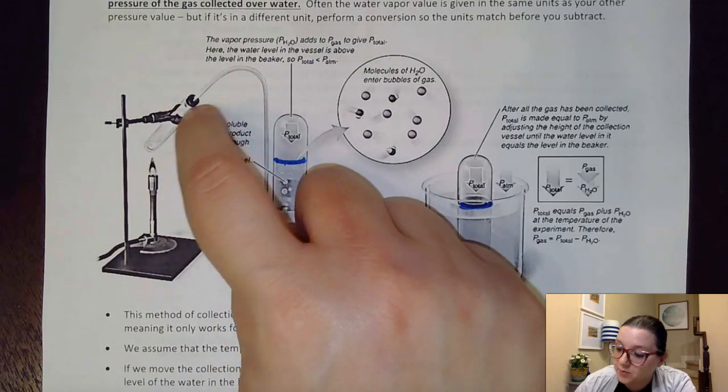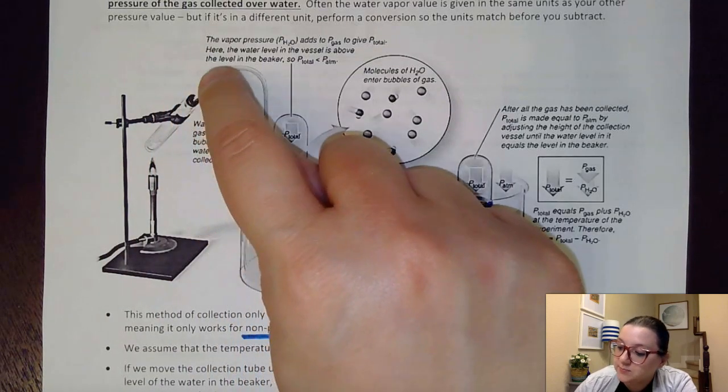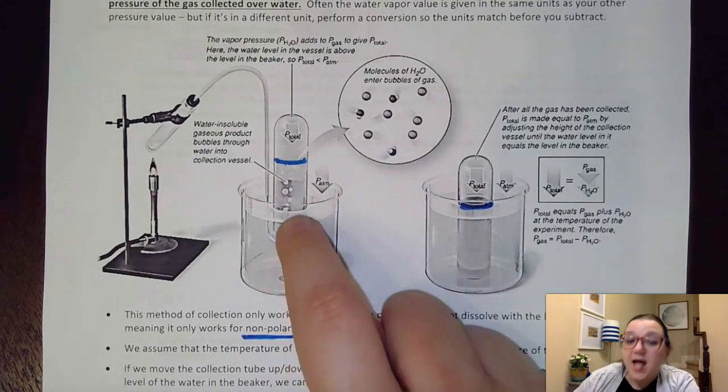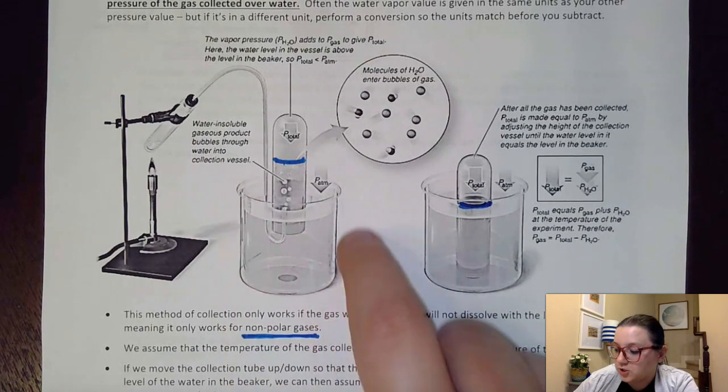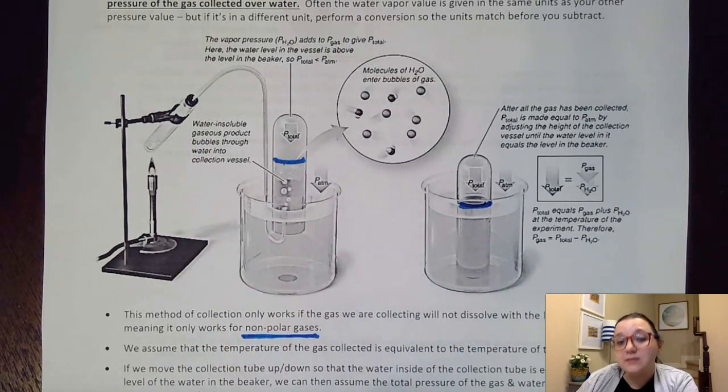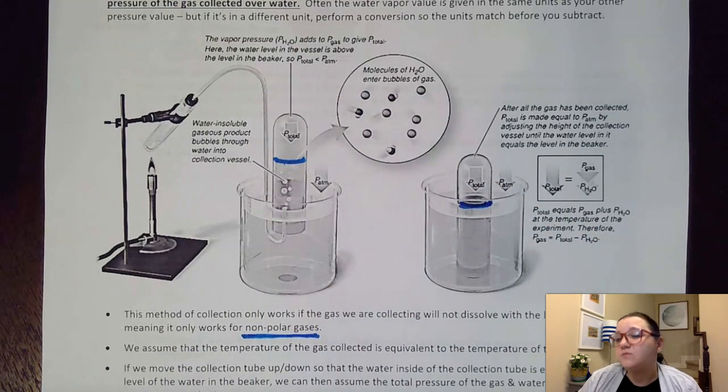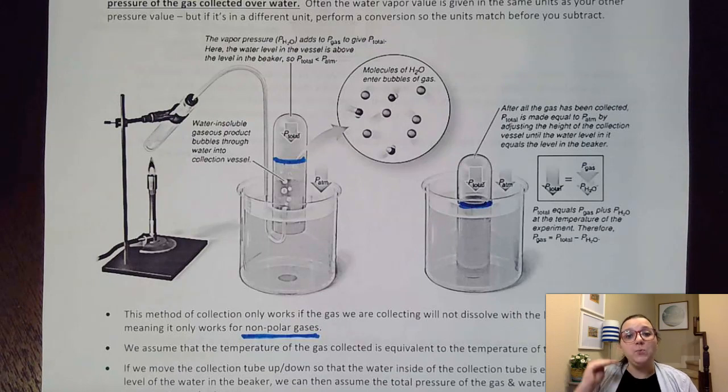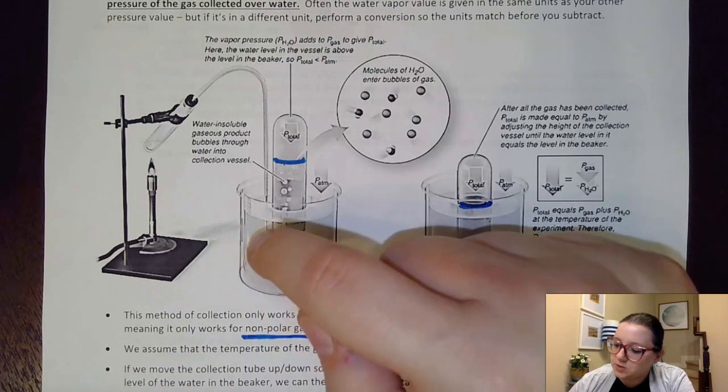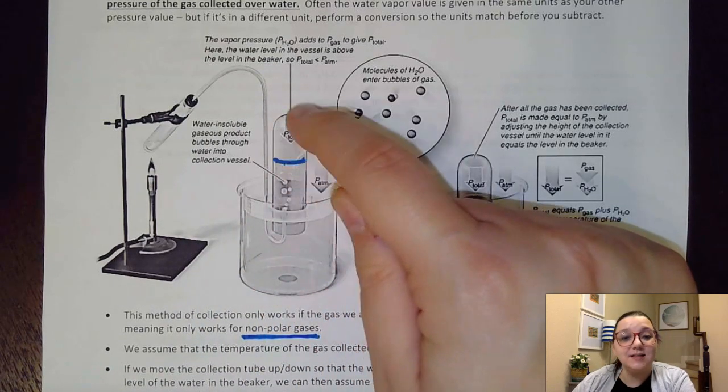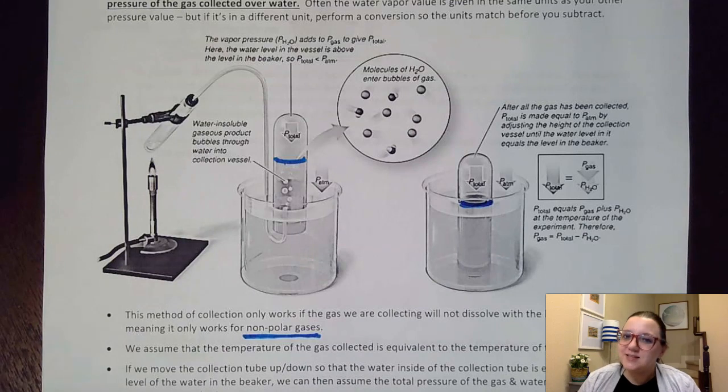So to do that, we would have a stopper in our reaction with some gas tubing coming out of it, and then we would run this into a large container of water where we had a smaller inverted container of water over it. This inverted container more than likely would be a graduated cylinder, so that way we would have some millimeter markings on there so we could actually record our volume. And what we would do is we would allow that gas to collect in the container. To see this in action, I've recorded an animation clip to show you how this would look.